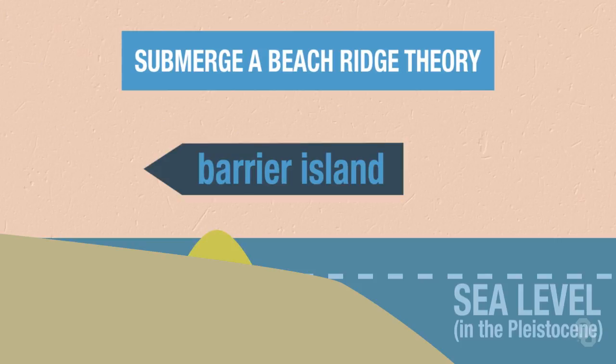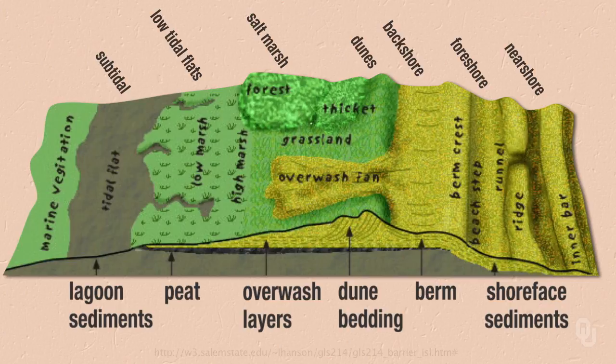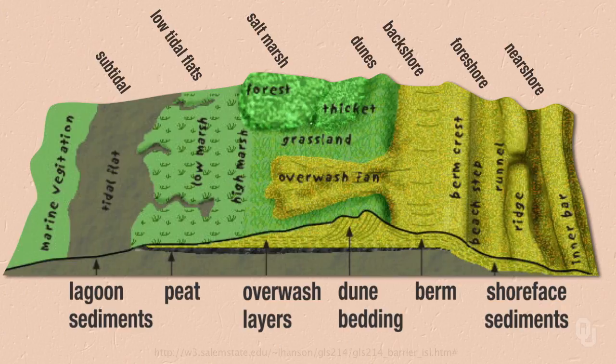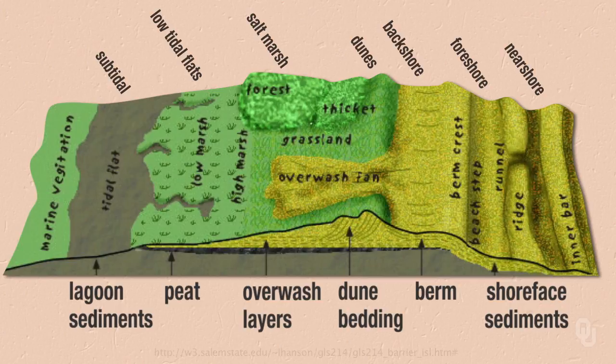These are the major environments on a barrier island. On the right, you have the shoreface sediments — these are the beach sediments. You have ridges and the beach berm. Then you get to the sand dunes. Sometimes these sand dunes are cut by what are called overwash fans. The island may also contain forests or grassland, depending on the type of island. The back part of the island consists of marsh, and then you may even have a tidal flat and then a lagoon. These are the major depositional environments on a barrier island.